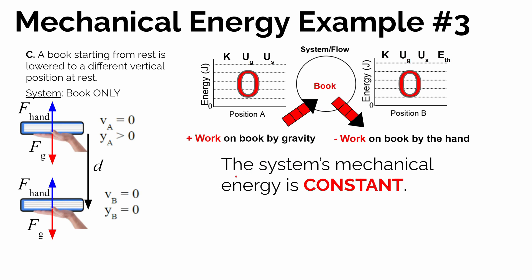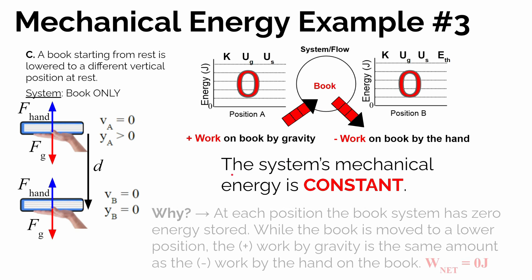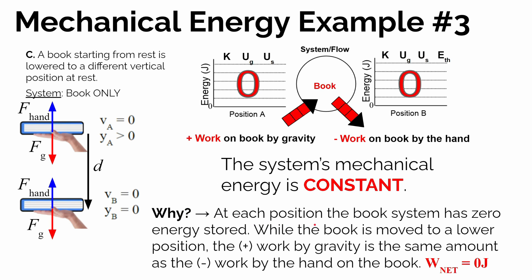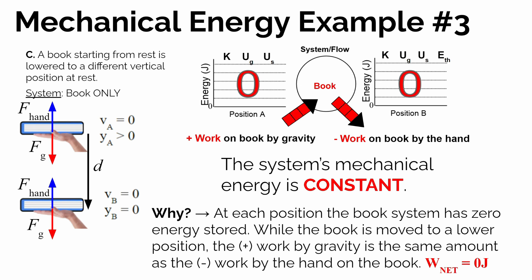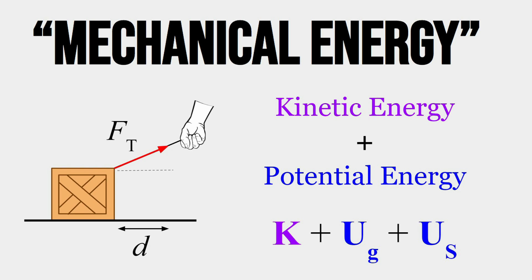So the system's mechanical energy is staying constant. At each position, the book system has zero energy stored. The positive work by gravity is the same amount as the negative work by the hand, so the net work on the book is zero — there's no net energy transfer in or out. I hope this video has helped you understand what physicists mean by mechanical energy: it's just the sum of the kinetic energy and the potential energy of the system, and how to determine whether the mechanical energy increases, decreases, or stays constant in a specific situation.